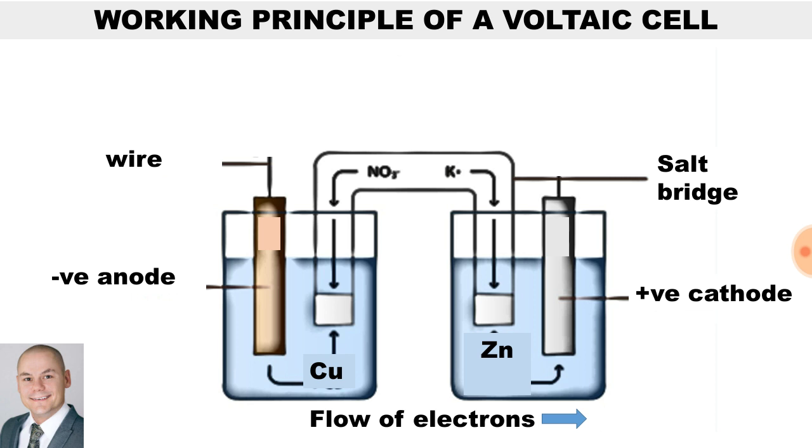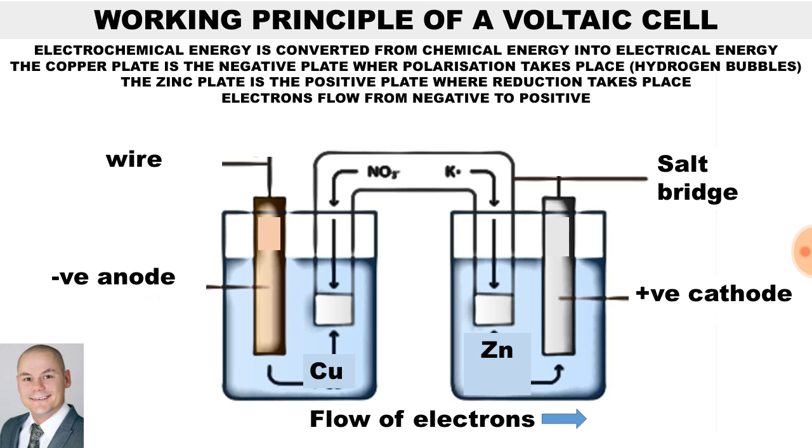The working principle of a voltaic cell: Electrochemical energy is converted from chemical energy into electrical energy. The copper plate is the negative plate where polarization takes place. You will see tiny little hydrogen bubbles forming around that plate. The zinc plate is the positive plate where reduction takes place, and electrons flow from the negative to the positive.